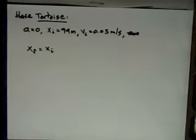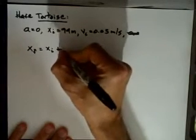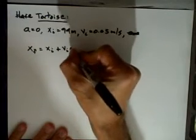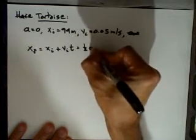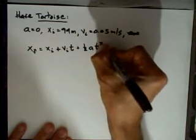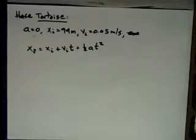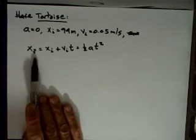And there is a nice constant acceleration formula that relates positions and time. And let me write it out for you. It's equal to the initial times the time plus one-half times the acceleration times the time squared. And this is one of those three magic formulas that I told you that are worth memorizing.